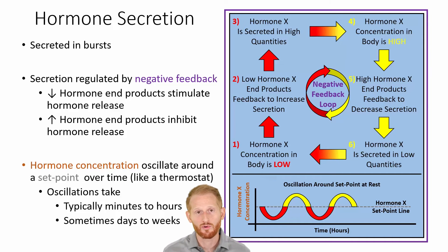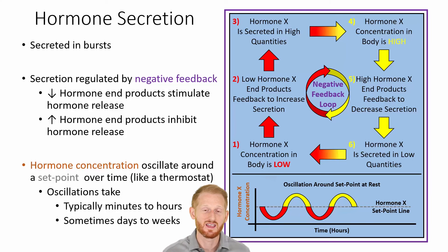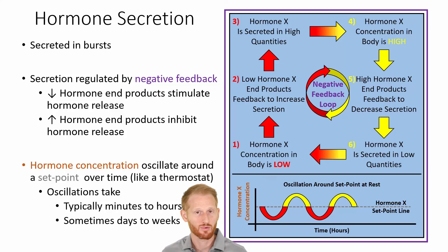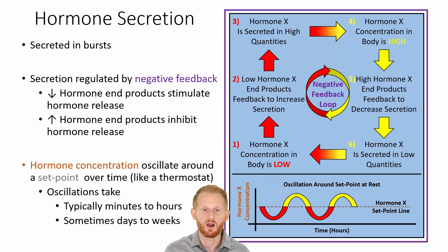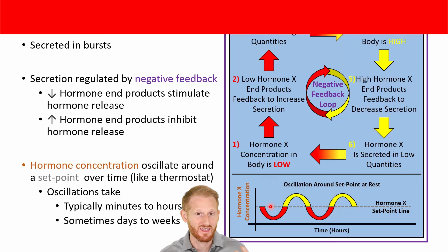Almost all hormones in the body use this negative feedback loop to control hormone levels. There are a handful of instances — think childbirth and delivery — where we do have positive feedback loops, where you want a ramping up of hormones to continue to progress the labor process until the baby is born. But most processes don't want a progressive increase in hormone level; we want a stable level around some set point that gives us the amount of end product we need.